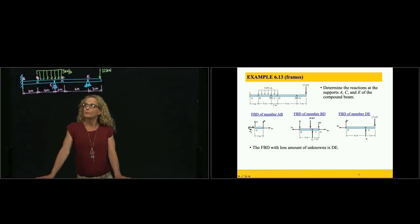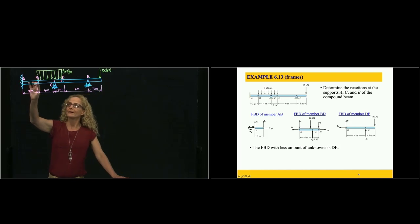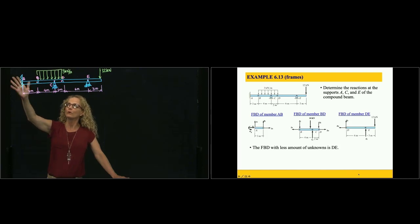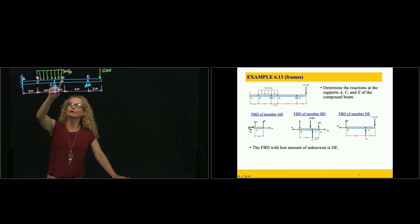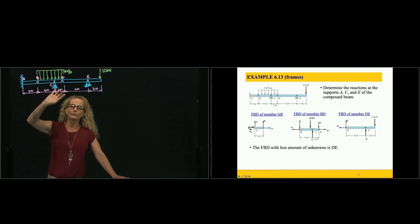This is problem 6.13. This is a frame composed of three beams. We have beam AB, connected to beam BD by a pin and fixed to the wall by a fixed support. Then we have beam BD, connected at both ends with pins, and then we have a roller here.